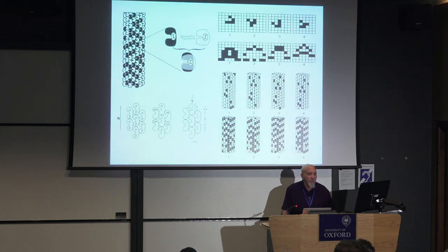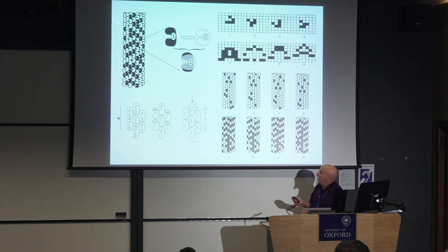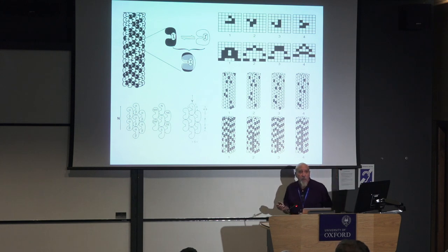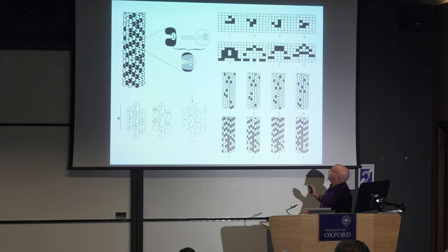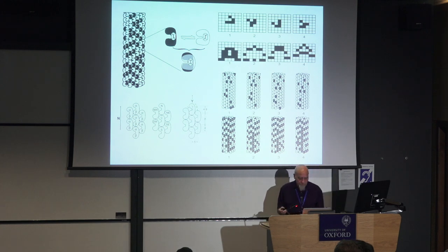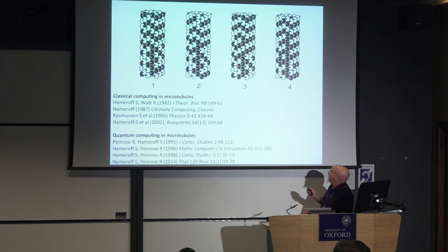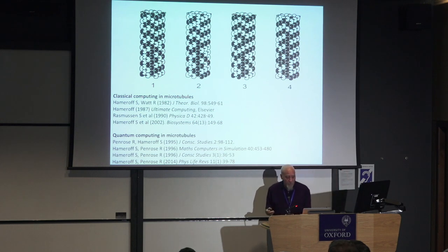This raises the question of information processing in microtubules. I'm speaking classically up to this point. I got interested in this in medical school in the early 70s during mitosis. The microtubule structure is a cylindrical lattice made of peanut-shaped proteins called tubulin that we model as cellular automata — kind of like the Game of Life — except on the microtubule lattice surface based on dipole couplings. We saw patterns that could propagate through the microtubule lattice and convey information. I wrote papers about classical computing and microtubules, and then with Roger, papers about quantum computing.